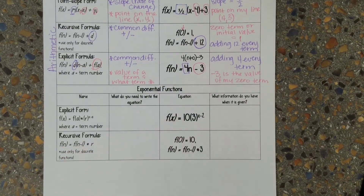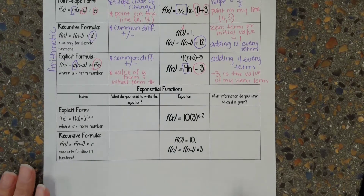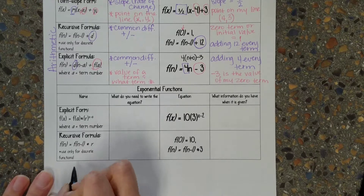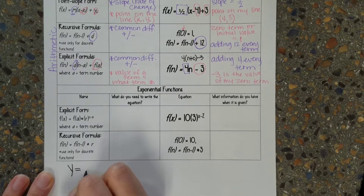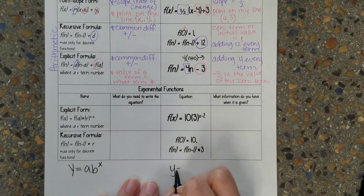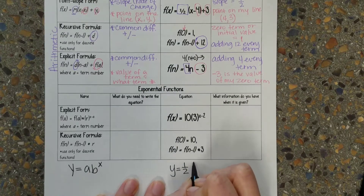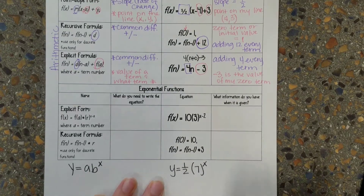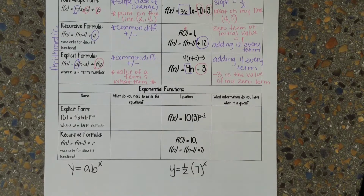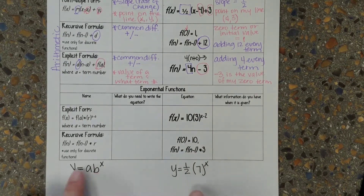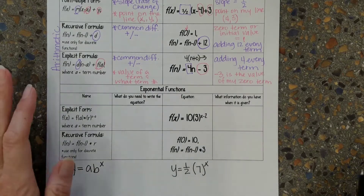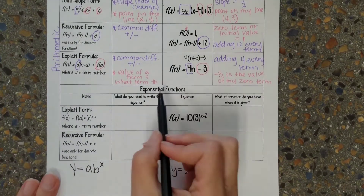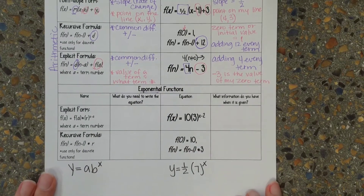Let's move on to exponential functions now. There's something missing from this one — it should say y equals A times B to the x power. The example we're going to use is y equals one half times seven to the x power. If you don't have that written down on your paper, make sure you pause this and write that down. So now we are on exponential functions. These are the geometric sequences.